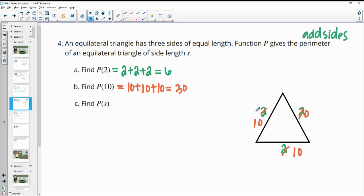And if our sides were just called s, then our perimeter would be s plus s plus s, which is 3 s's. So the perimeter would be 3s.